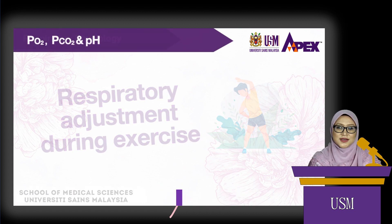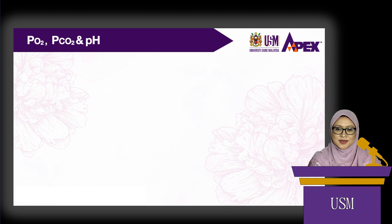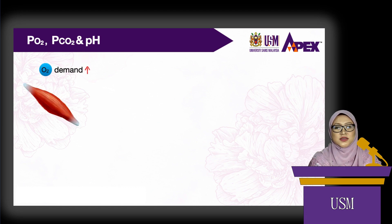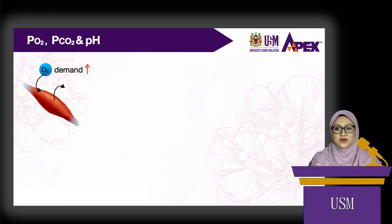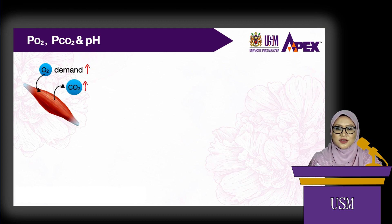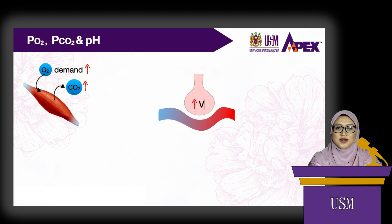During exercise, the exercising muscles have a high oxygen demand, and from increased tissue metabolism, there is increased carbon dioxide production. To get more oxygen and to get rid of the carbon dioxide, the alveolar ventilation increases.